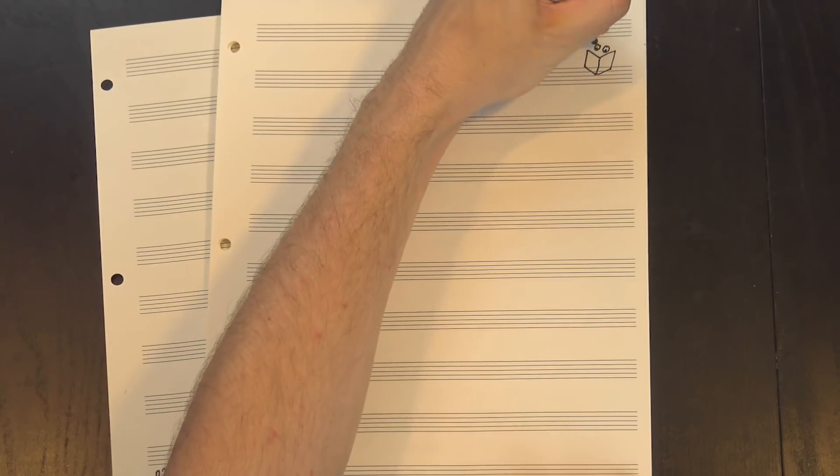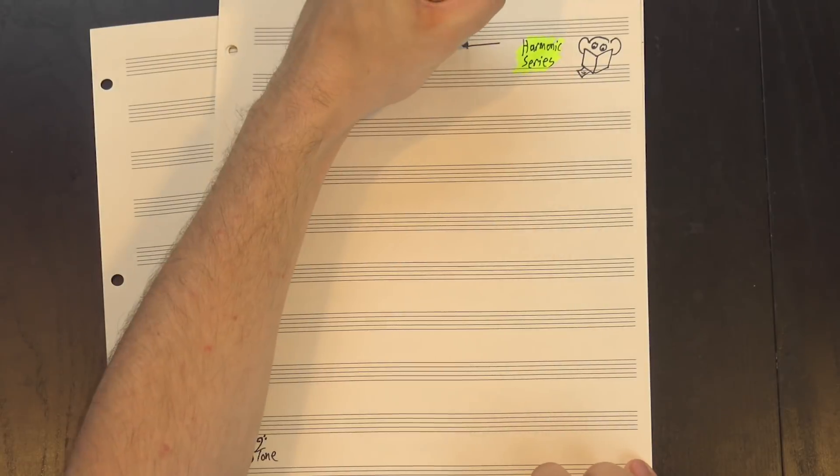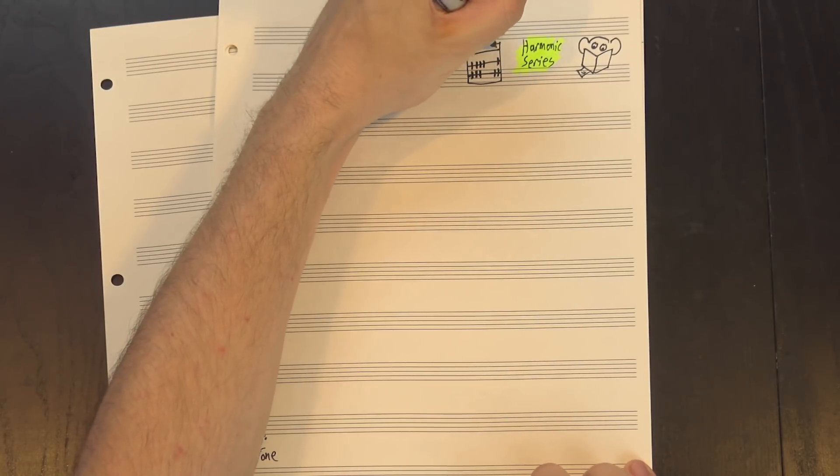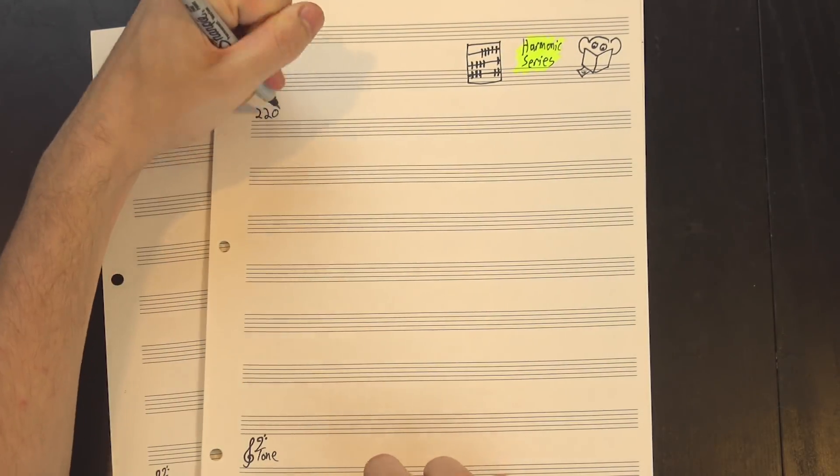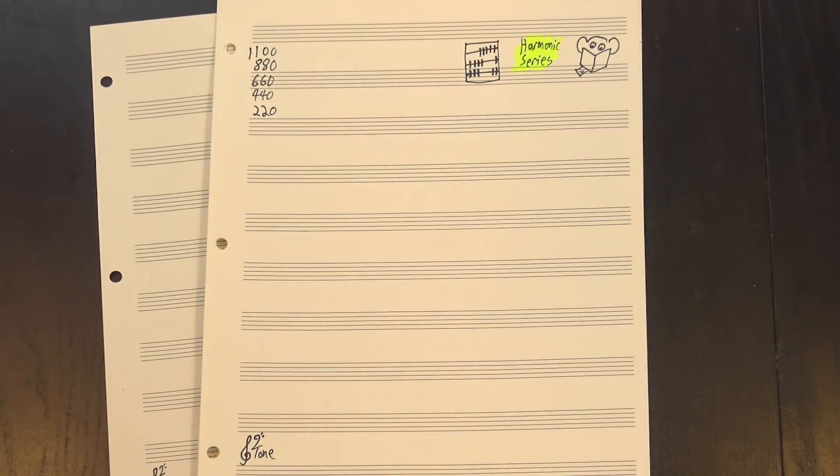Well, in order to do that, we need to look at how intervals work, starting with something called the harmonic series. This is just a list of all the multiples of a given fundamental frequency. So if we start with 220, its harmonics would include 440, 660, 880, 1100, and so on.